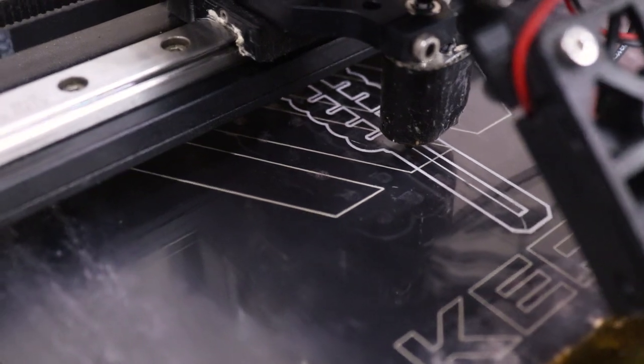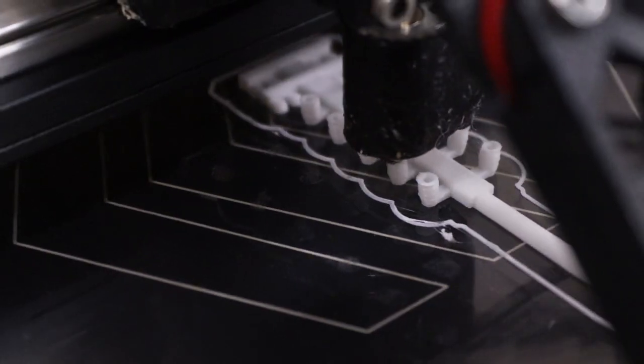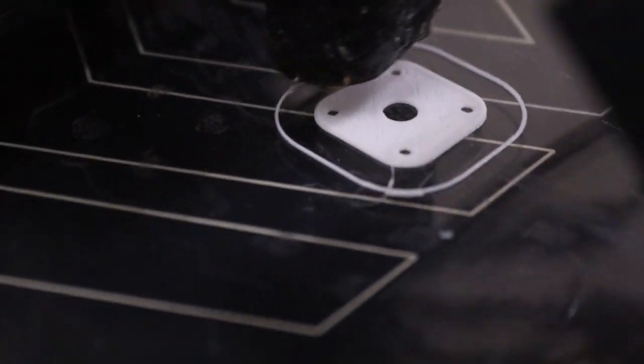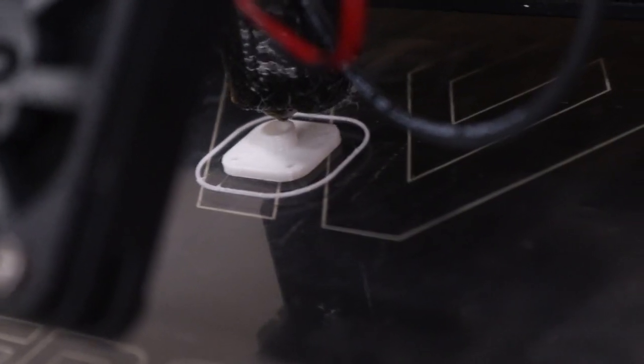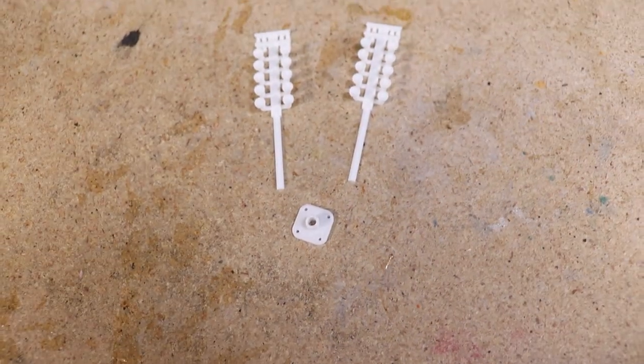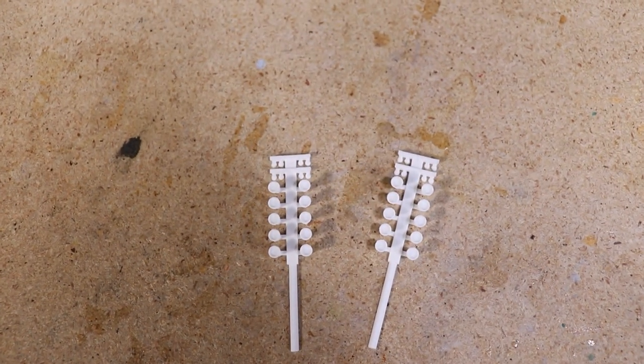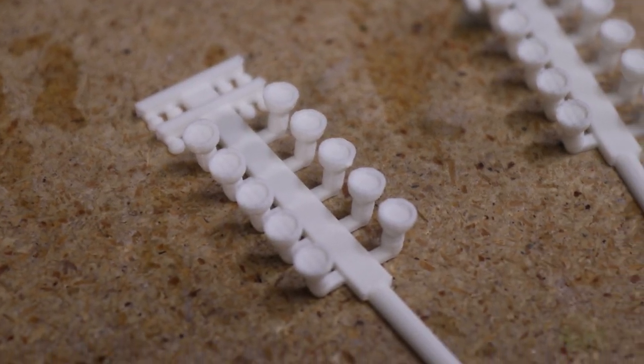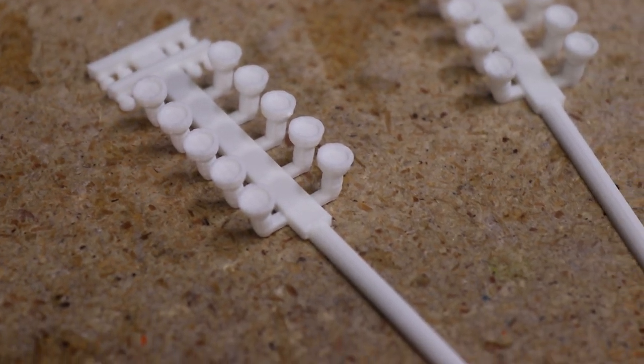With the design complete, I printed each part using a 0.25mm nozzle. Supports shouldn't be necessary. Each part looks great. Splitting the main post section into two pieces makes it so much easier to print than trying to do it upright as a single piece.